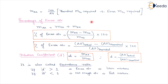This is all about the concept of excess air. In this lecture, we have seen the concept of excess air. In the next lecture, we will see the actual air fuel ratio and the Orsat apparatus. Thanks for watching this video and have a good day.